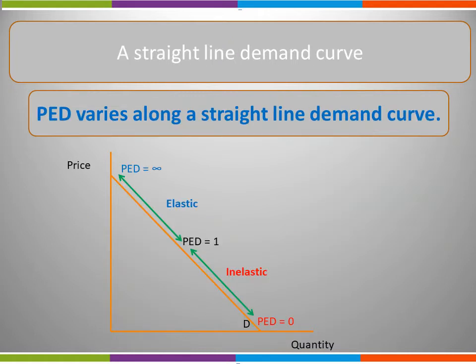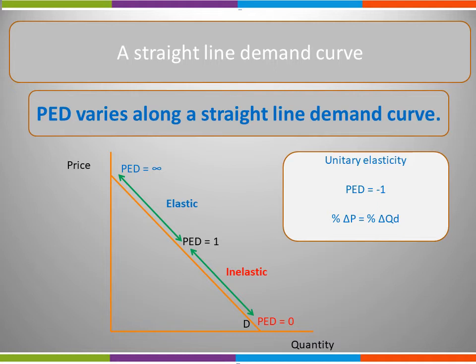We can use a straight line demand curve to demonstrate the fact that PED varies as we move along the demand curve. Remember that price and quantity are showing actual numbers, but for PED we are interested in the percentage change between these numbers. The top half of our curve is where the elasticity of demand will be elastic, and the bottom half will be inelastic. The extremes would be perfect elasticity where PED is infinity, or perfect inelasticity where PED equals zero. In the middle of our curve we have unitary elasticity of demand, where PED equals minus one — that is, the percentage change in price equals the percentage change in quantity demanded.